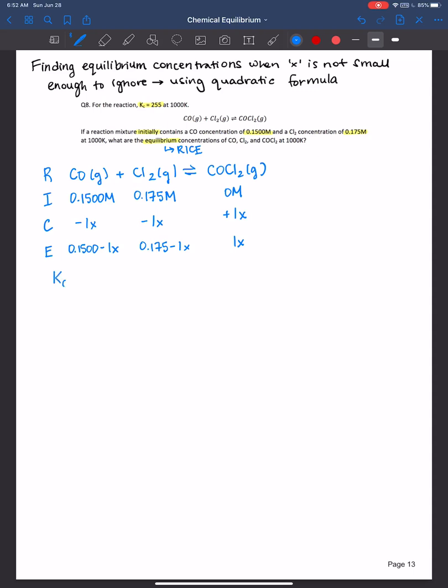We set that equal to the equilibrium constant expression. That's always what over what? So I like to derive that first. And remember, you're always plugging in equilibrium concentrations here. And so we will be plugging in our algebra expressions that we derived in the rice table at equilibrium.